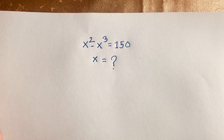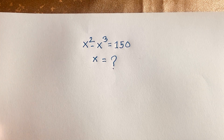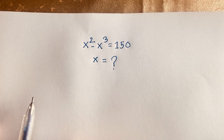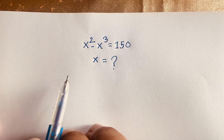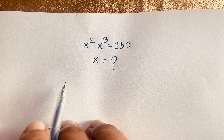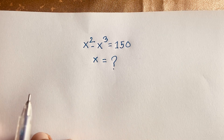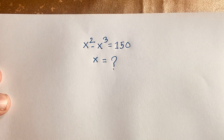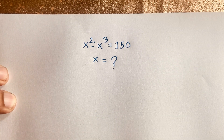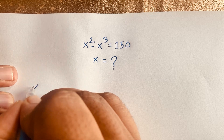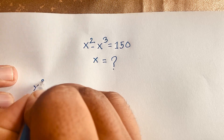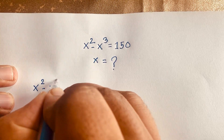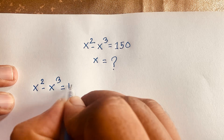Hello everyone. In this video we have solved this interesting exponential equation. It is a German Math Olympiad question. The question is x squared minus x cubed is equal to 150. We will find out what is the value of x in this exponential equation, and how to solve this interesting maths question.